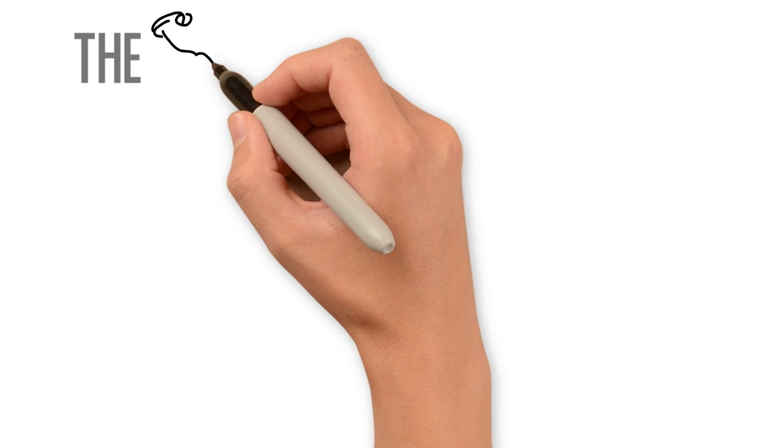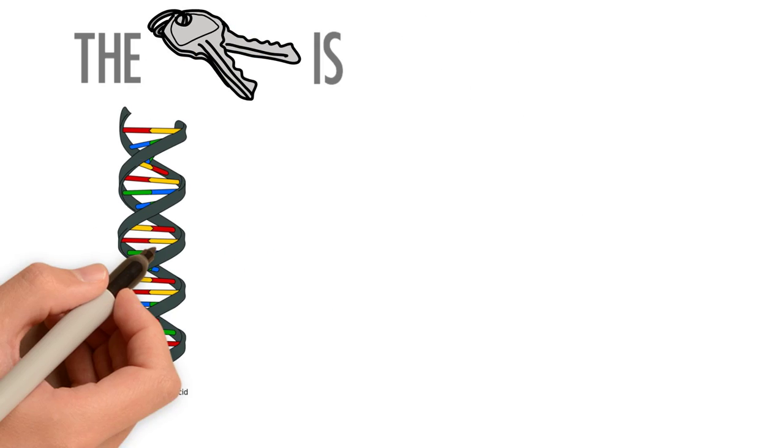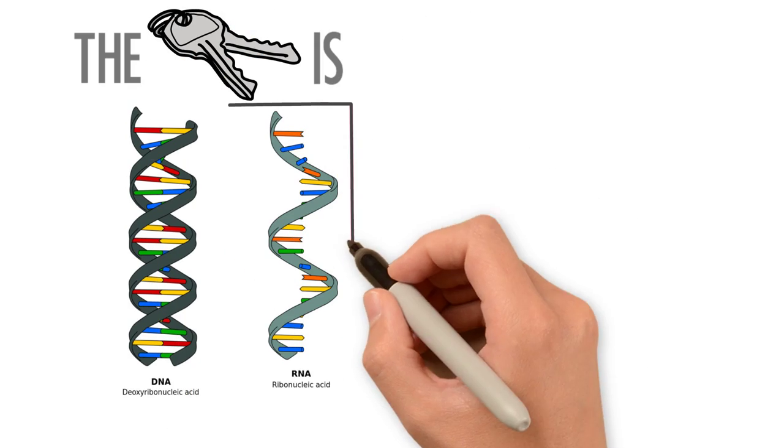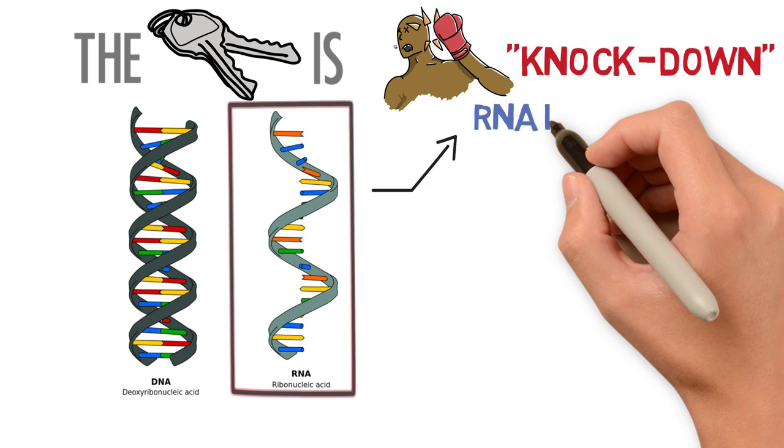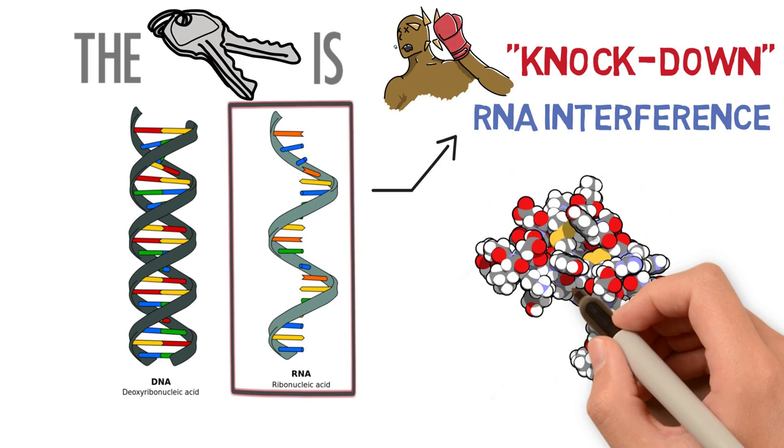The key lies not in what we all know as DNA, but a very similar molecule known as RNA. The knockdown phenomenon I described is called RNA interference, or RNAi, which is very important because it stops proteins from being made.